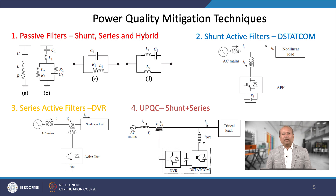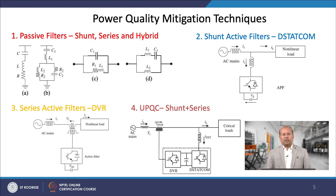Even though passive filters are extensively used in many applications, they have limitations. They are not adaptable to varying system conditions due to their size and tuned frequency, which cannot be altered easily. A change in system conditions will detune the filter and cause increased distortion. For an effective filter design, the overall impedance must be less than the source impedance. As a result, a large filter is required and causes over-compensation of reactive power. In consideration of these limitations, active power filters are an important and flexible alternative to compensate voltage and current related power quality problems in distribution systems.